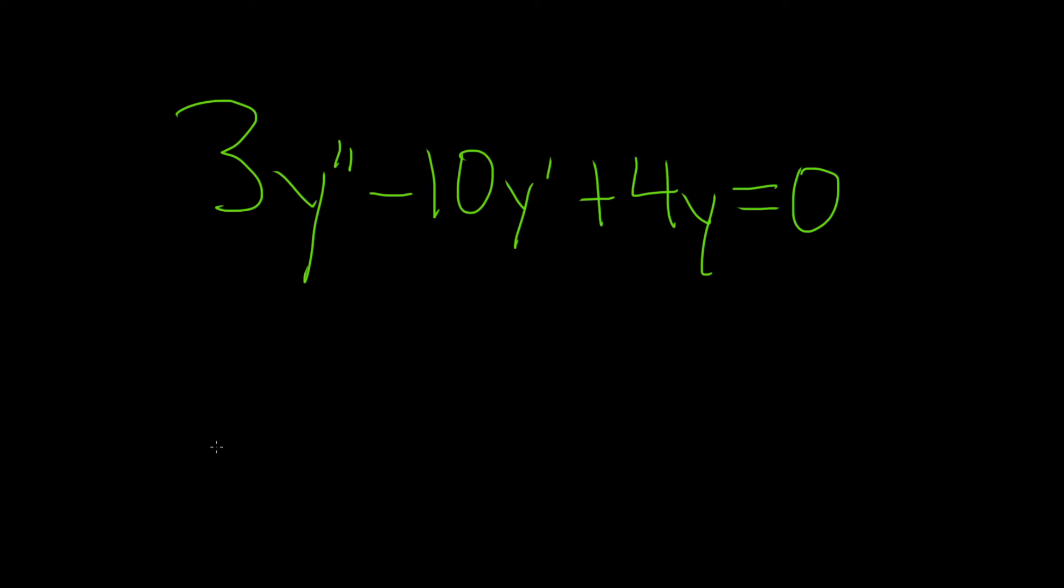In this problem, we're going to solve this linear second-order differential equation with constant coefficients. So whenever you have a linear DE with constant coefficients that's equal to 0, what you do is you start by writing down what's called the characteristic or auxiliary equation.